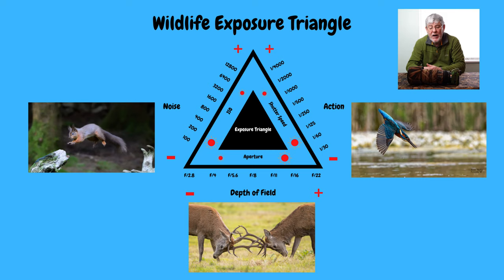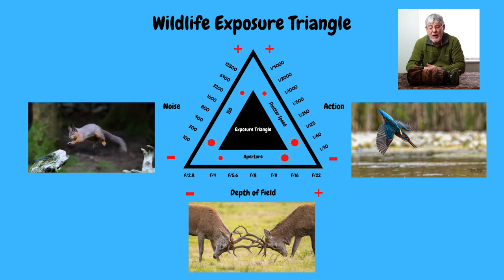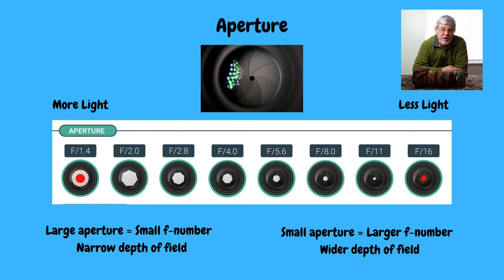So what is the aperture? The aperture is the size of the opening of the lens. The larger the aperture, the more light gets into the camera, and vice versa — the smaller the aperture, the less light enters. All apertures are measured in f-stops. It's kind of back to front: the larger the aperture, the smaller the f-stop number. So a large aperture would be something like f/2.8 and a small aperture would be something like f/22.